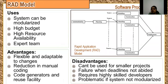The next model is the RAD model — Rapid Application Development. The name itself suggests it gives a very rapid form of delivery and also high-quality delivery. It consists of the software development lifecycle phases: communication, planning, modeling, construction, and deployment — all five are present.